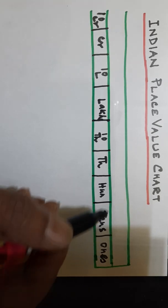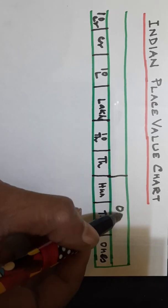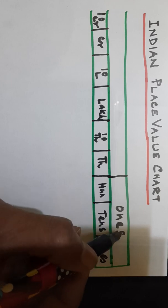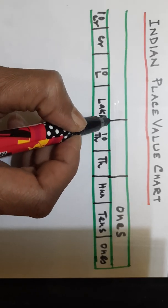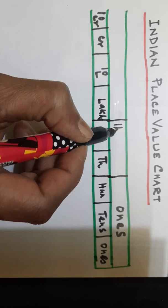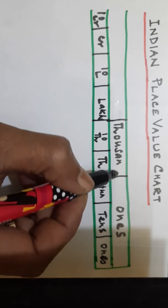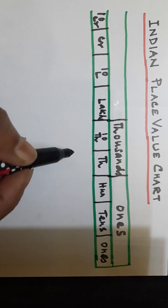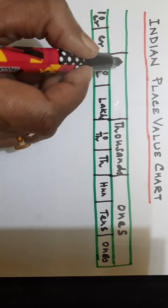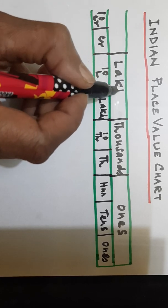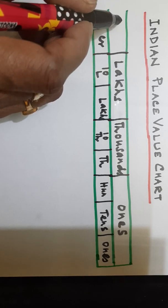Ones, tens, and hundreds — these three places are in the ones period. Thousands and ten thousands are in the thousands period. Lakhs and ten lakhs are in the lakhs period. Crores and ten crores are in the crores period.